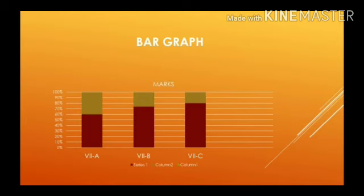Bar graph. It is used to display the category of data and compares the data using solid bars to represent quantities. For example, the marks scored by seventh standard children in sections A, B, and C are given in the form of a bar graph.